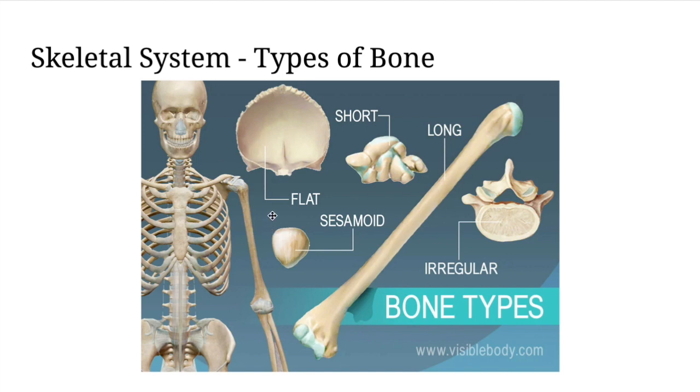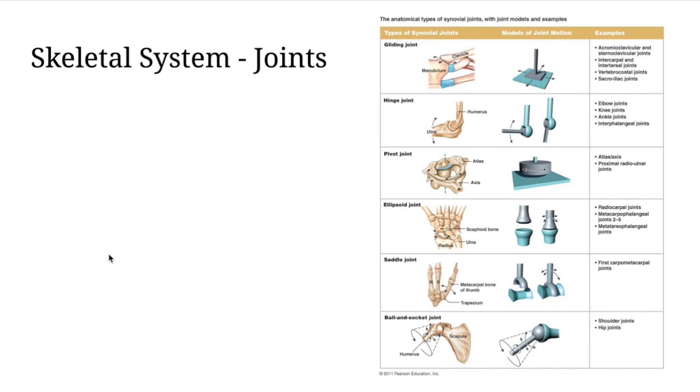And finally we have vertebrae, which falls into the irregular bone category. It's called an irregular bone really because it has an odd shape and it doesn't fit into any of those other types of bone.